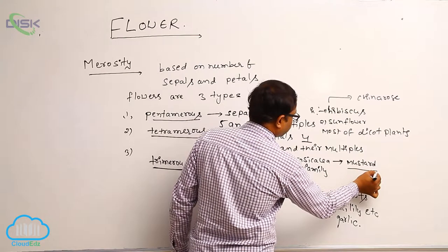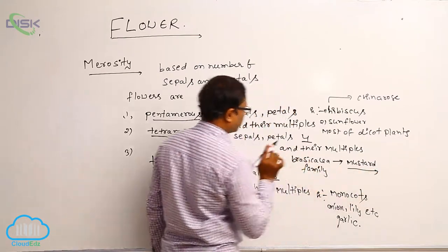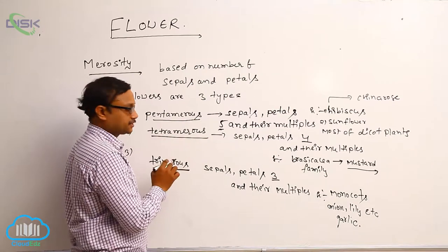Common name it is that, generally it is a mustard belongs to the brassicaceae family. That is known as the tetrameras condition.